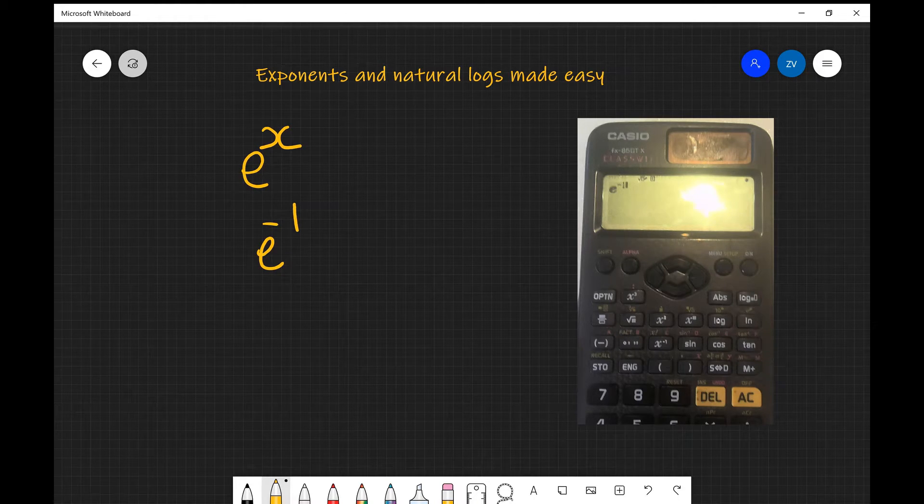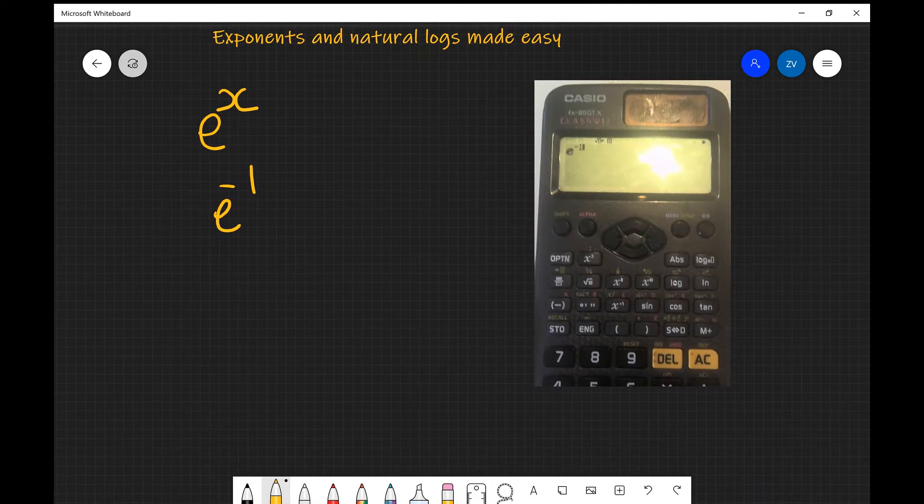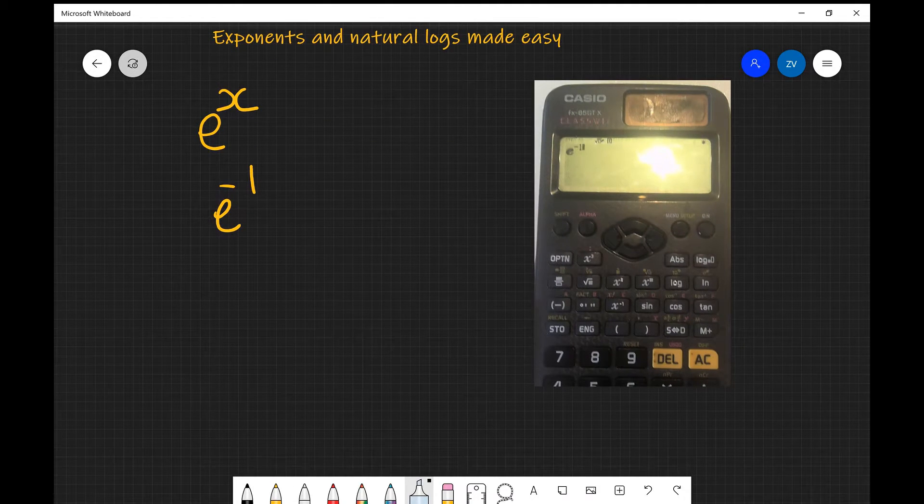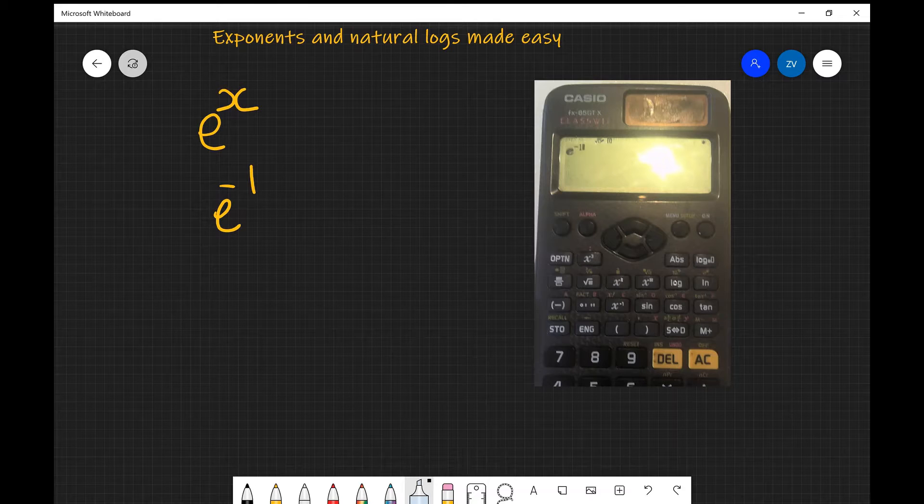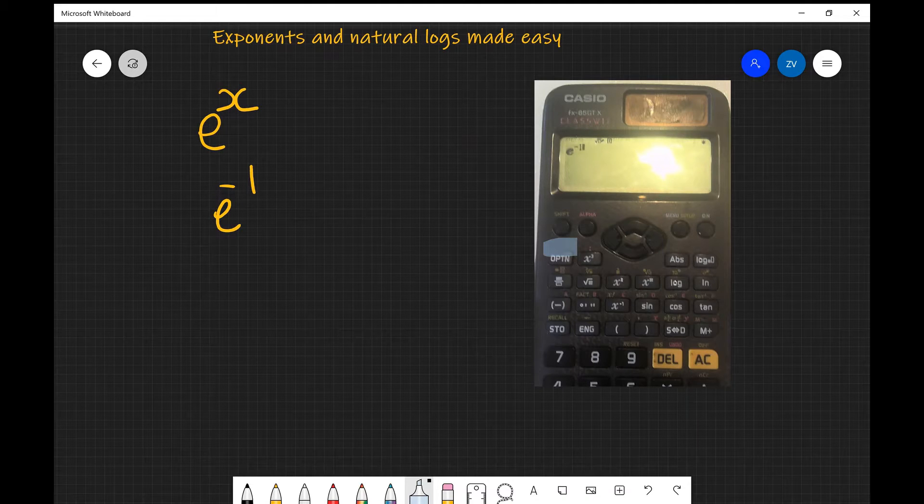Now I've got a little picture here of my scientific calculator that I've just taken and the way we bring out the exponential function is by pressing this shift button and then straight after that you're going to notice that just above the ln button it says e to the power of x.